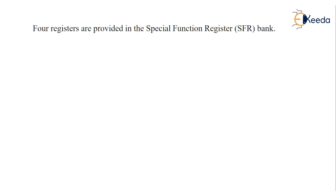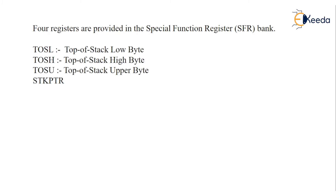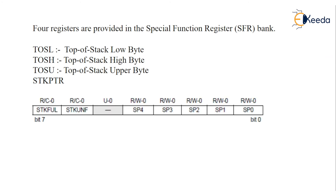Four registers are provided with the special function registers. TOSL — top of stack low byte — holds bits 0 to 7. TOSH — top of stack high byte — holds bits 8 to 15. TOSU — top of stack upper byte — holds bits 16 to 20. TOSL holds 8 bits, TOSH holds 8 bits, and TOSU holds 5 bits, because our program memory is 21 bits wide — so 8 bits in TOSL, 8 bits in TOSH, and the remaining 5 bits in TOSU.